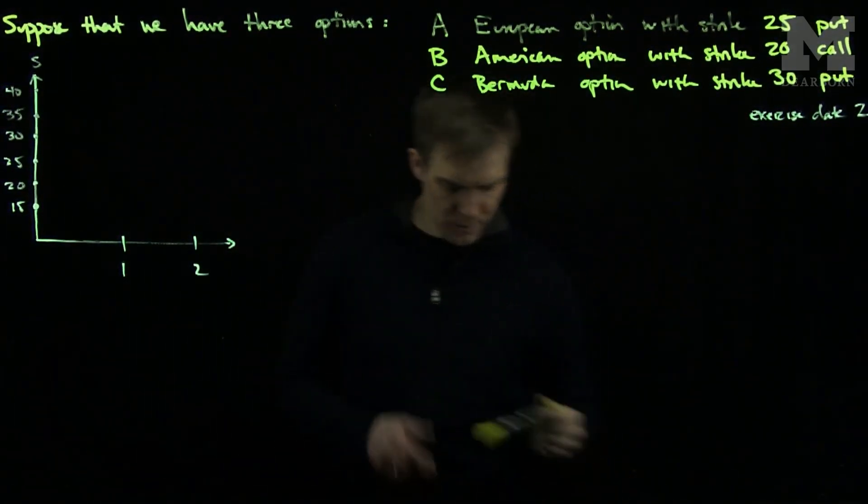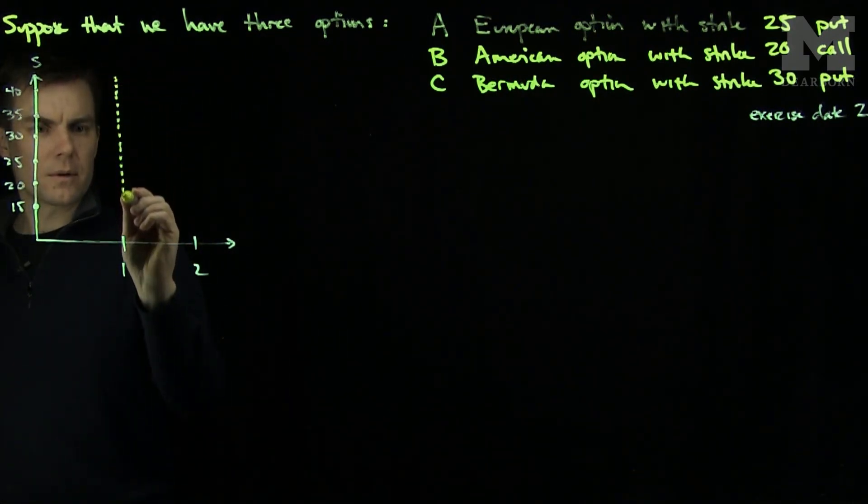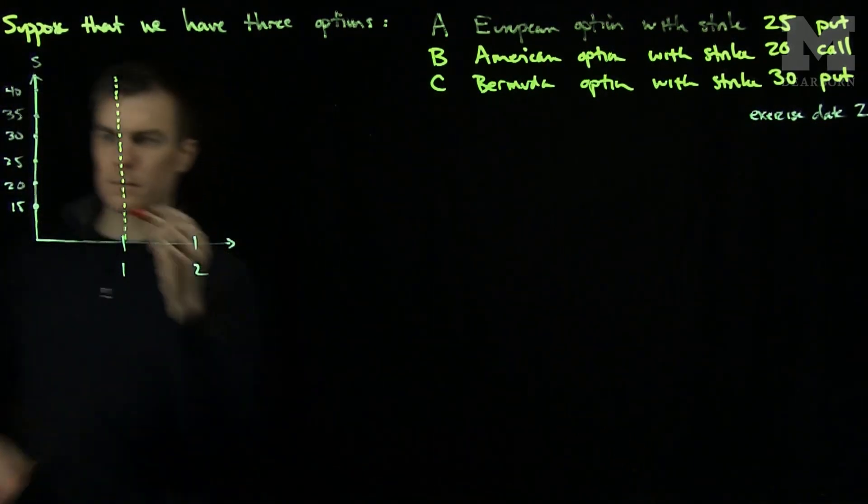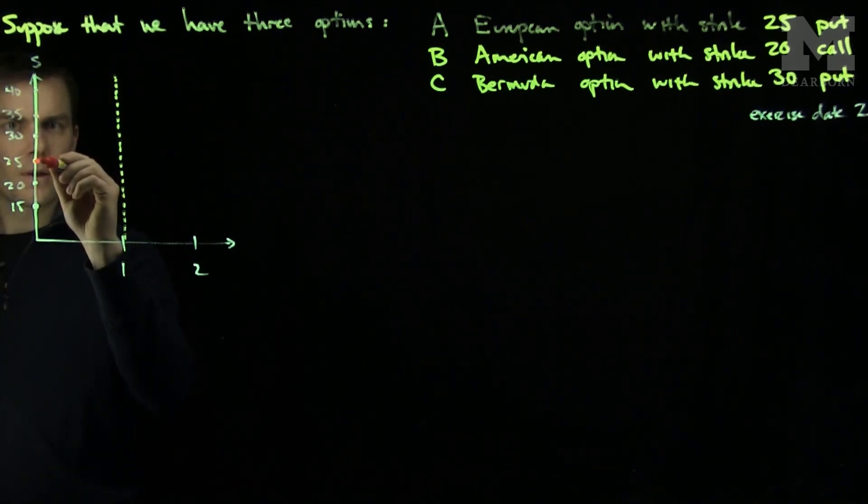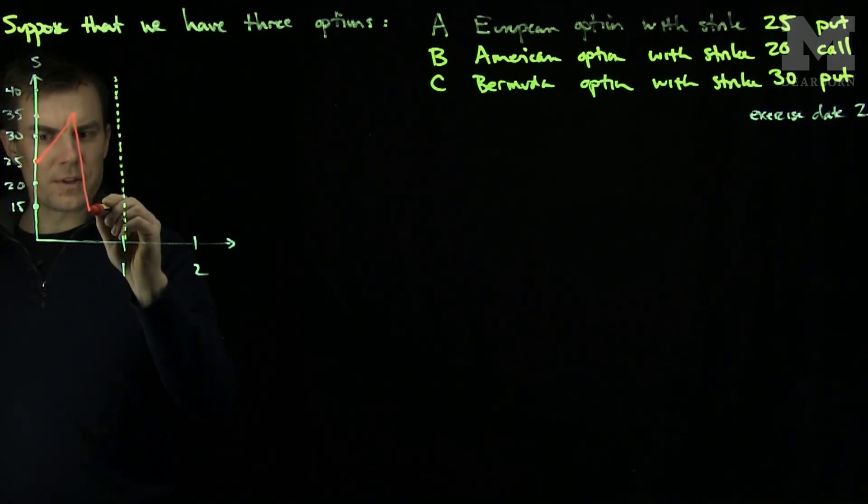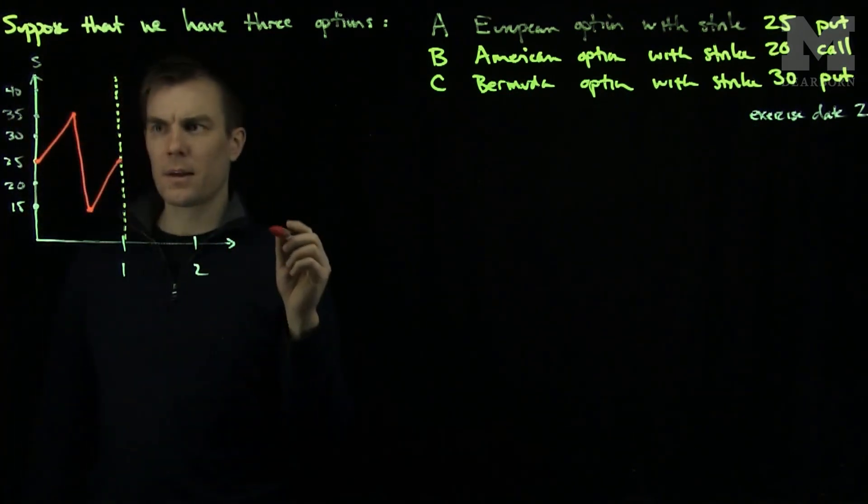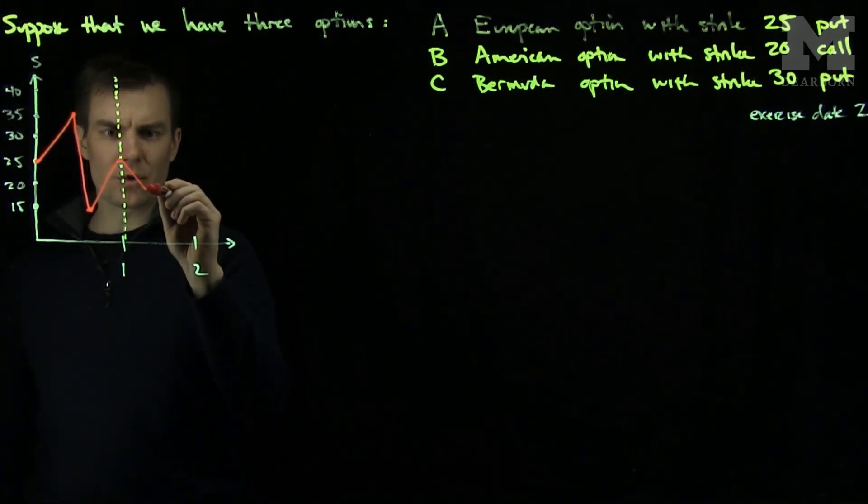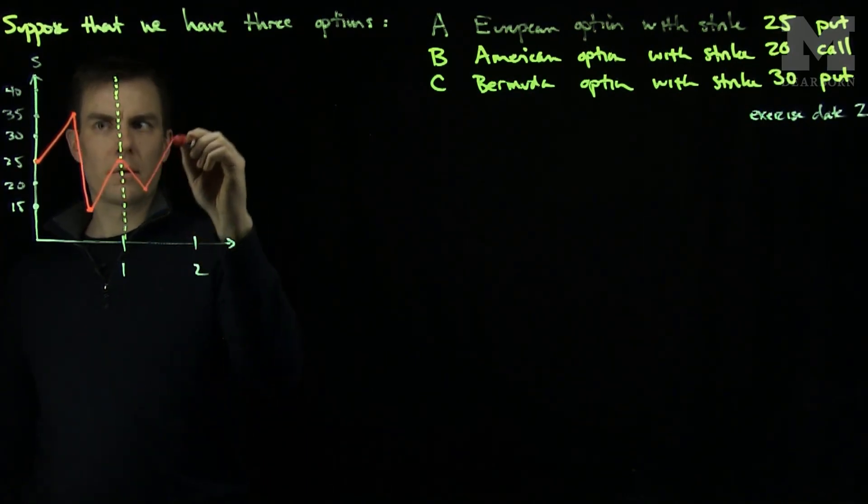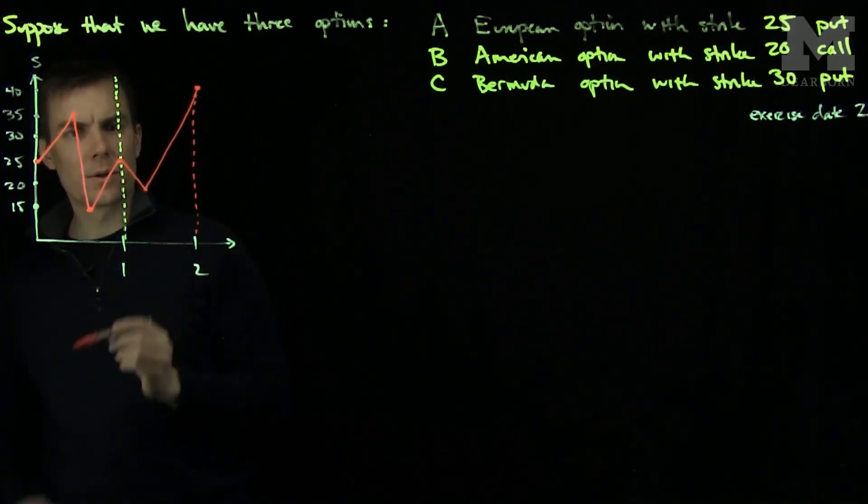The stocks will follow this pattern. Let's suppose the stock starts at 25, goes up to 35 at this point, down to 15, and then at year one it goes back up to 25. Then it goes down to 20, and finally it will go up to 40 at expiration. So this will be the price of our stock.